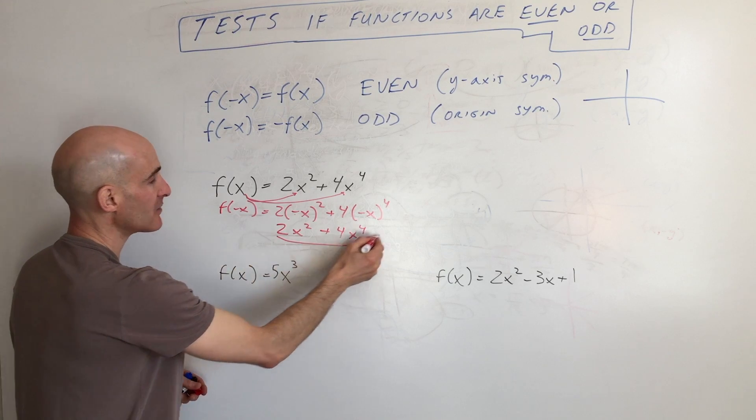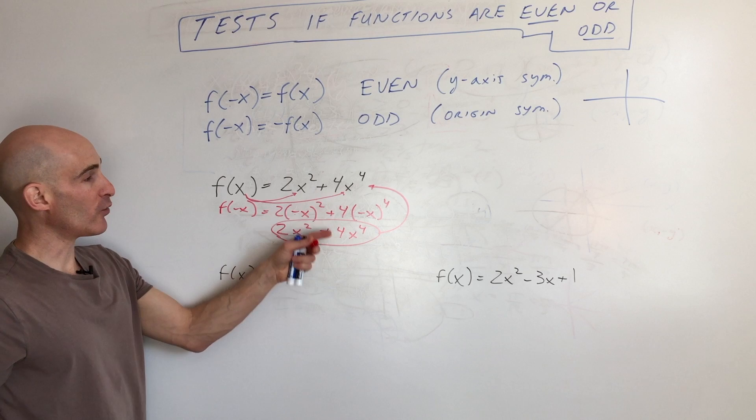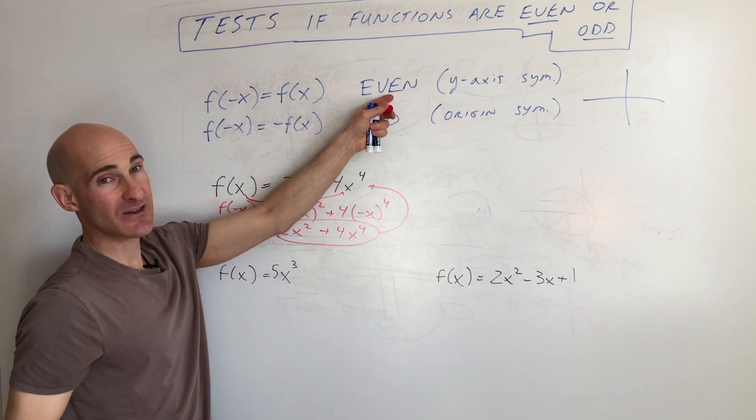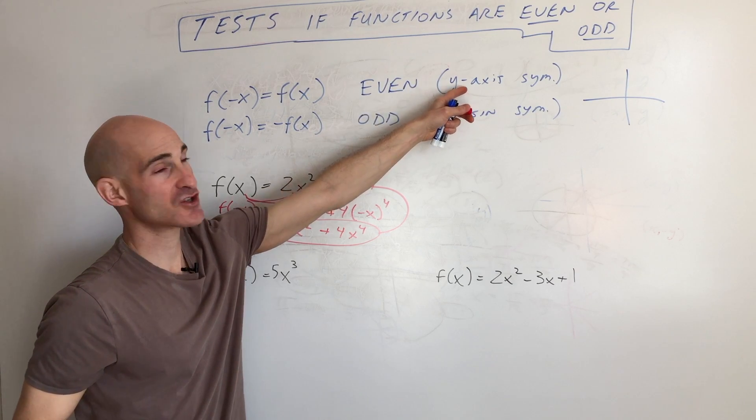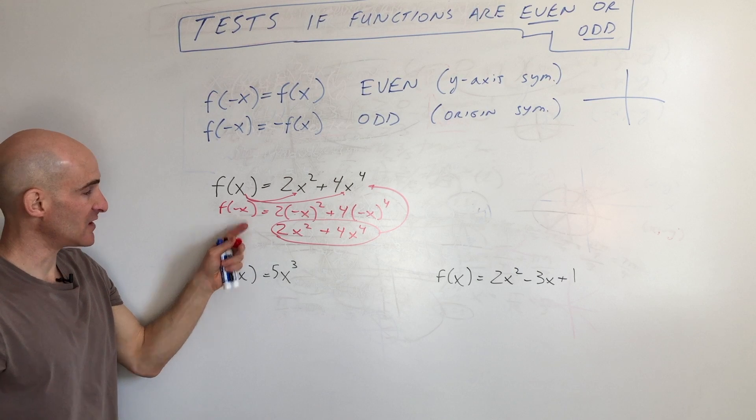You can see we're getting back the original equation, exactly how the original one was. So that tells you that this graph is even, it has even symmetry, and it's a reflection over the y-axis. But we just call this even. So this is the test for even, you're substituting a negative x.